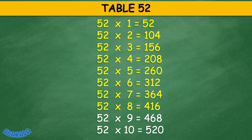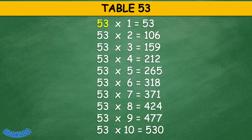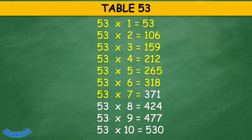52 times 9 equals 468, 52 times 10 equals 520. Table 53: 53 times 4 equals 212, 53 times 6 equals 318, 53 times 7 equals 371, 53 times 8 equals 424, 53 times 9 equals 477, 53 times 10 equals 530.